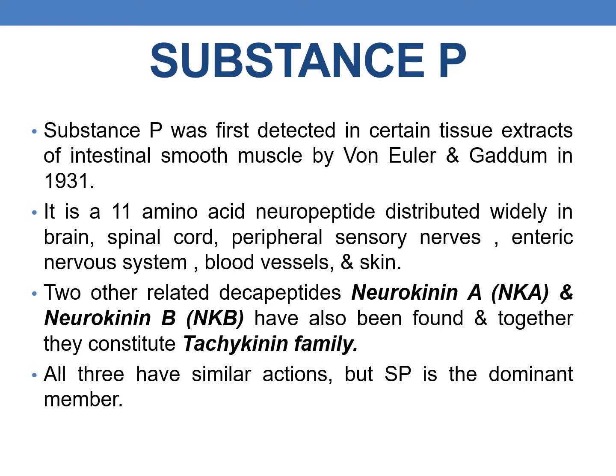Substance P is an 11 amino acid neuropeptide distributed widely in the brain, spinal cord, peripheral sensory nerves, enteric nervous system, blood vessels, and skin. Two other related decapeptides, Neurokinin A and Neurokinin B, have similar actions and together they constitute the tachykinin family. Of all three, Substance P is the dominant member.